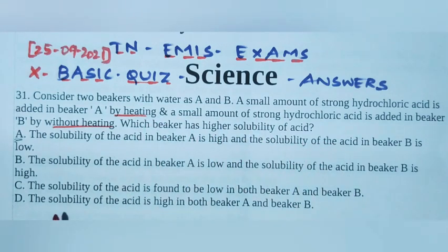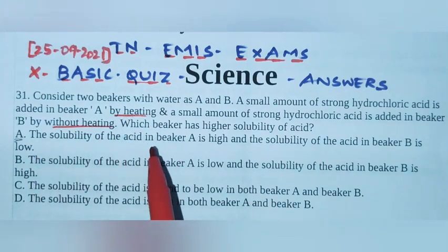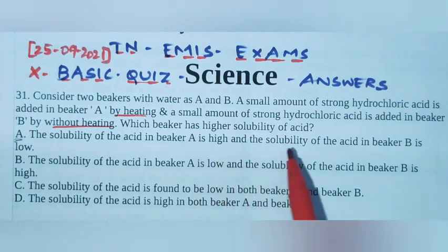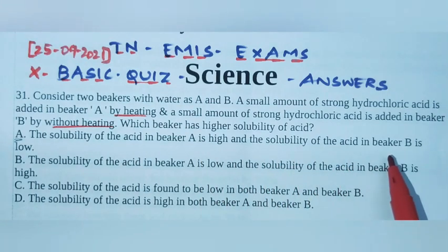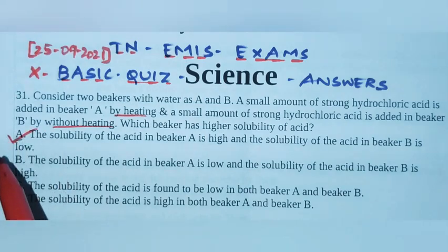So solubility is higher with heating. Beaker A has higher solubility because heat is present. The solubility of the acid in beaker A is high and the solubility of the acid in beaker B is low. So option A is the right answer.